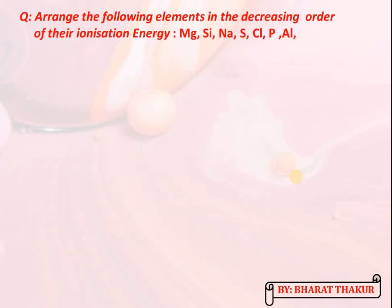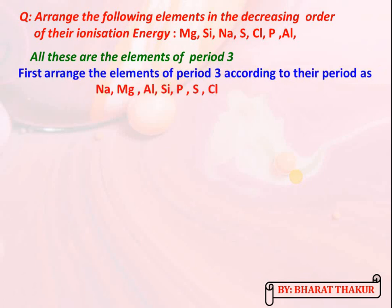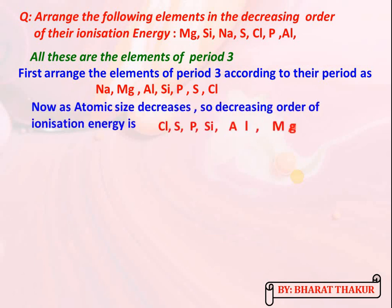Next question: arrange the elements of period 3 in decreasing order of their ionization energies. The elements of period 3 in proper order are: sodium, magnesium, aluminium, silicon, phosphorus, sulfur, and chlorine. Since atomic size decreases and nuclear charge increases from left to right, ionization energy increases along the period. For the decreasing order, we write them from right to left: chlorine to sodium.